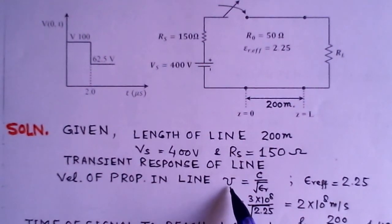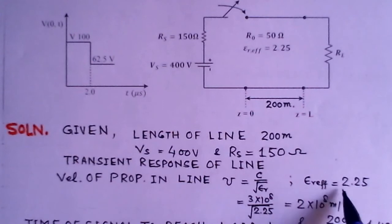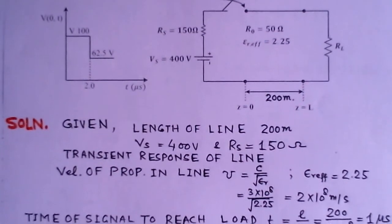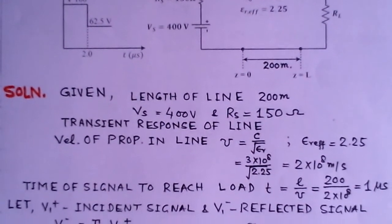Velocity of propagation on the line could be given by V equals to C divided by epsilon root R, where C is the velocity of light. Epsilon R effective is given for this transmission line which is 2.25. So we substitute here 3 into 10 power 8 over square root of 2.25. This gives me 2 into 10 power 8 meters per second. So this is the velocity of propagation on this line.